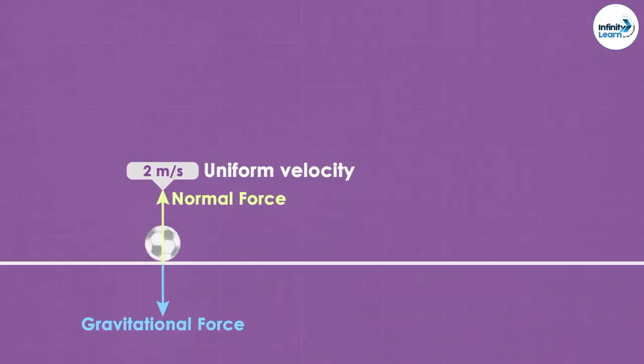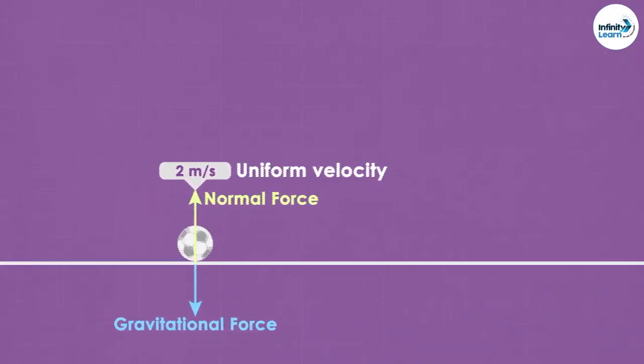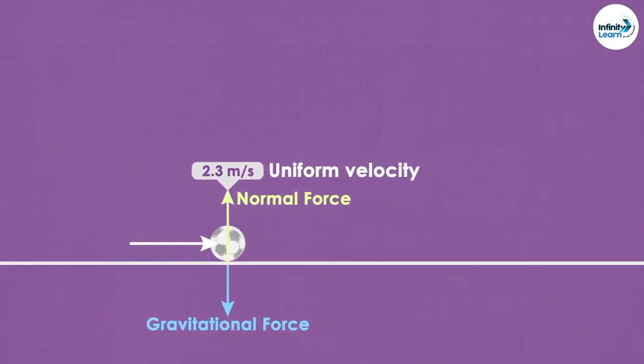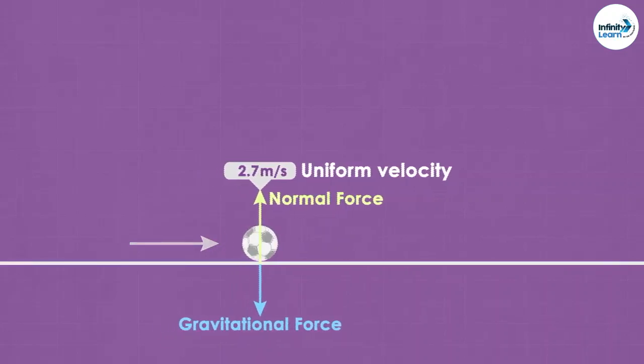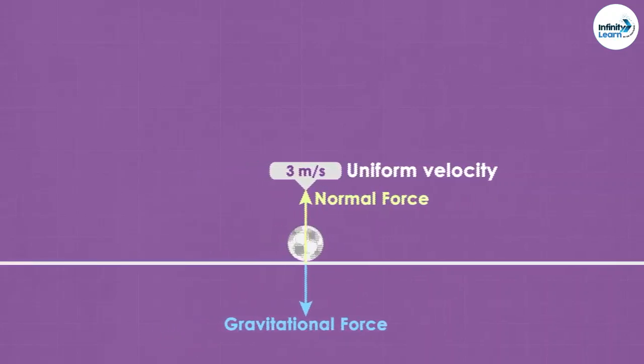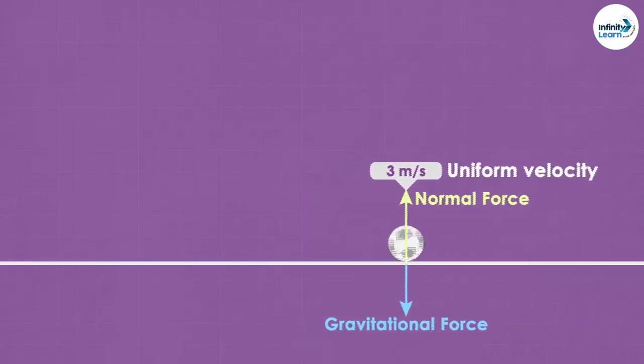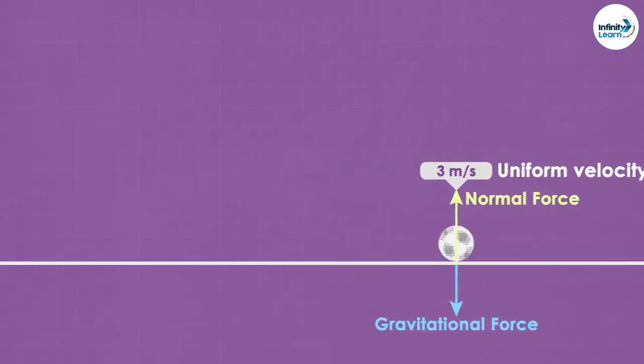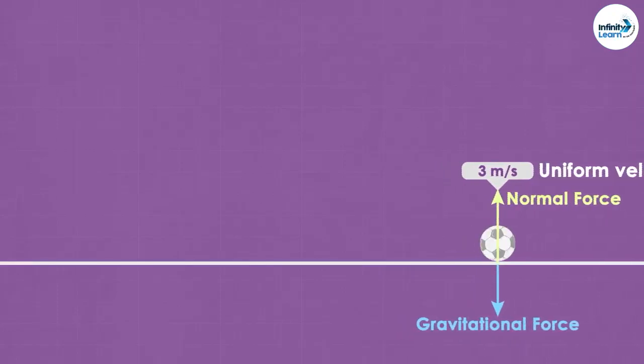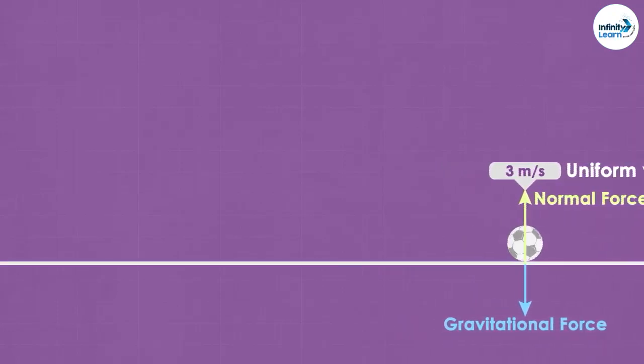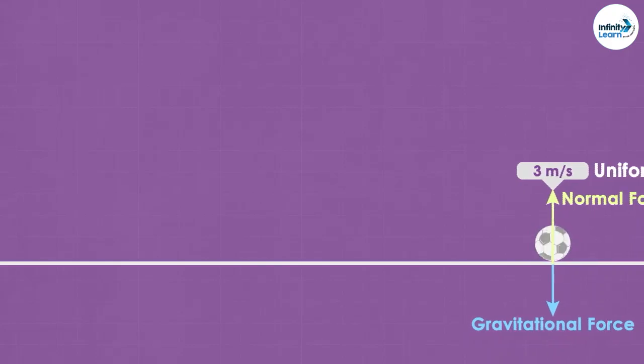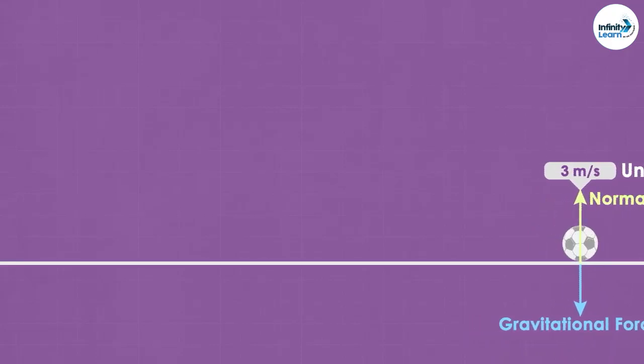Now when this ball is moving at 2 meters per second and an external force is applied from the left, what will happen? Yes, the ball will accelerate. Its velocity will change. Let's say the velocity changes to 3 meters per second after this external force is applied. After that, the ball will continue to move at 3 meters per second unless acted upon by another external force.